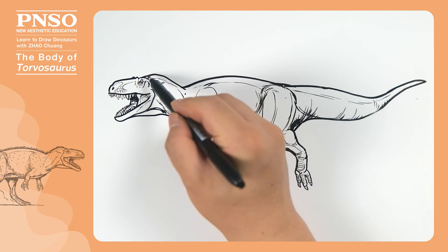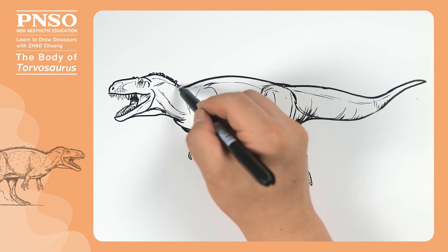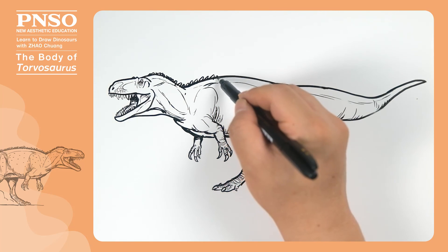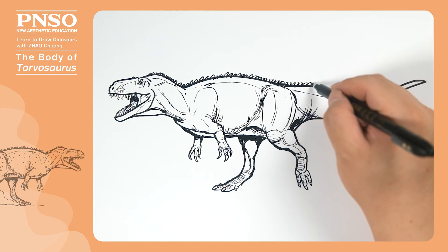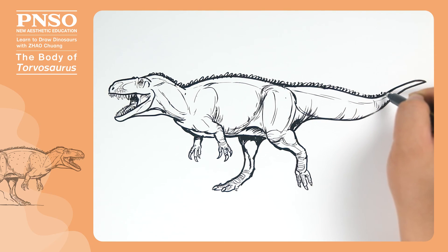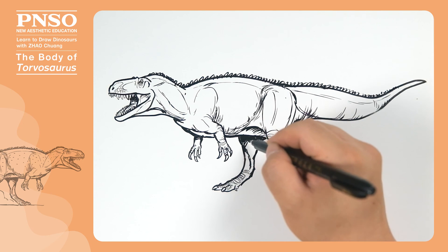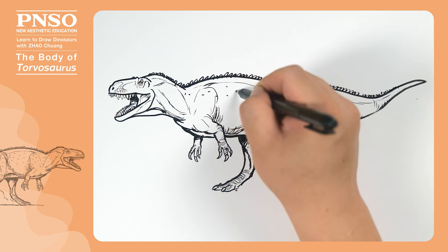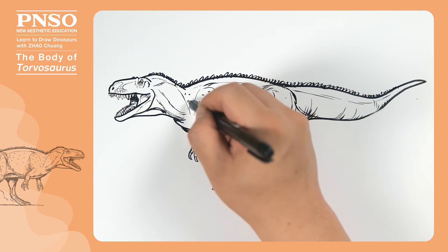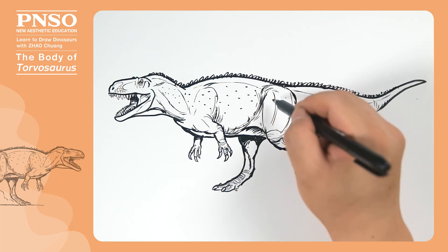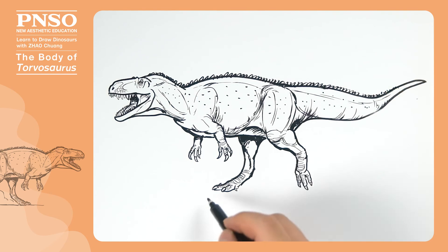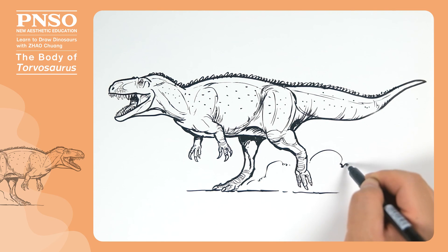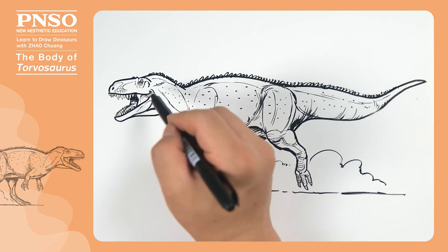Then, we can draw a series of spikes on the side of its back. On both sides of the body, draw some dots to represent the irregular distribution of large scales. Then draw a little bit of dust. Good. Like this, we've finished drawing the body of Torvosaurus.